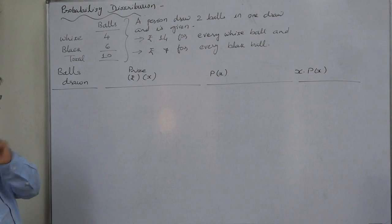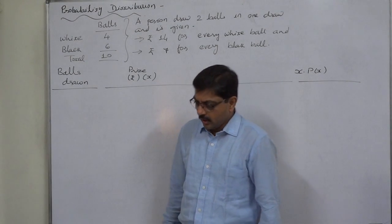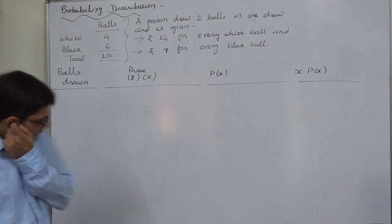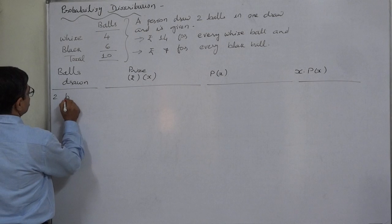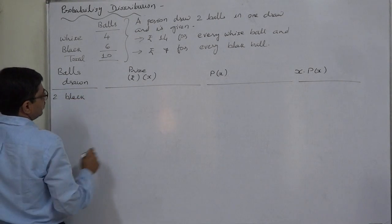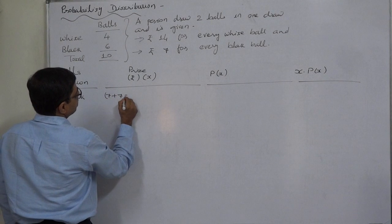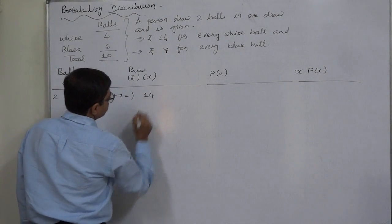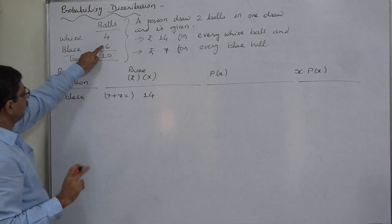That means there are 3 possibilities or 3 mutually exclusive outcomes are possible. One is 2 black balls are drawn. That means the price will be 7 plus 7, that is 14 rupees. How can it happen? 2 black out of 6.